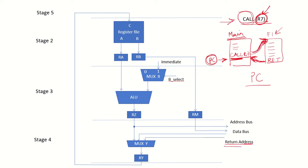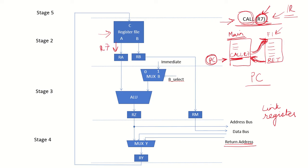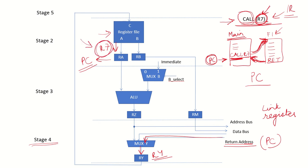The return address is stored in a register called the link register, which is also available in the register file. In the call R7 instruction: at the end of the fetch stage, the instruction is in the instruction register; in the decode stage, R7 is read and put in register RA; in stage 3, it is sent to the program counter; and in stage 4, the return address from the program counter is brought back to RY. Before the PC is updated with the subroutine address, the return address is stored in the link register in stage 5.